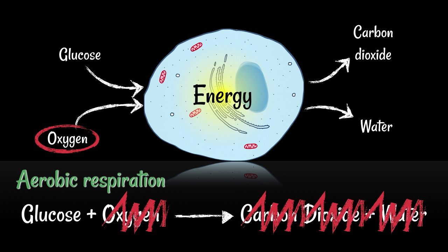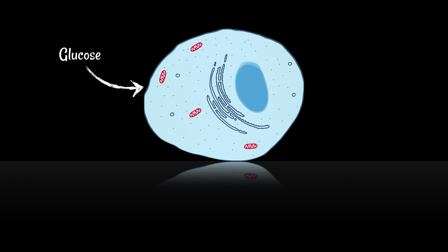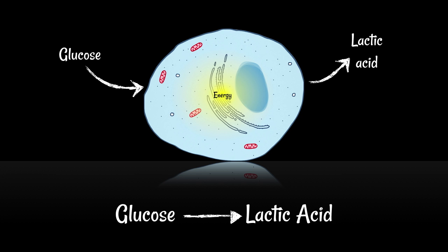process of aerobic respiration is not going to progress. The alternative is that in the absence of oxygen, glucose will be converted to lactic acid, and in the process it will release a very small amount of energy. The word equation for this is again very simple: glucose goes to lactic acid, and this process is known as anaerobic respiration.